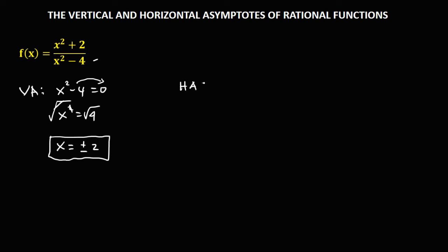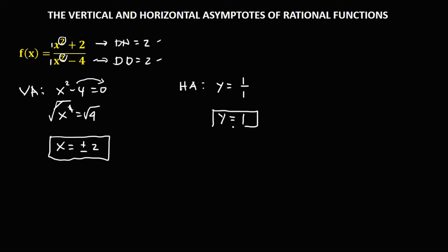To solve for the horizontal asymptote, we check the degree of the numerator, which is equal to 2, and the degree of the denominator, which is also equal to 2. Since the degree of the numerator is equal to the degree of the denominator, the horizontal asymptote is the ratio of their leading coefficients. Therefore, y is equal to 1 over 1, or y equals positive 1.